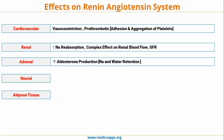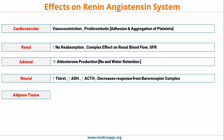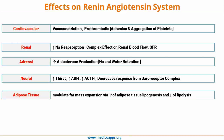In the adrenal glands, the renin-angiotensin system leads to stimulation of the adrenal cortex, resulting in increased aldosterone production, which causes sodium and water retention. At the neural level, there is increased thirst, increased ADH production, increased ACTH production, and decreased input from the baroreceptor complex. For adipose tissue, it modulates fat mass expansion via increased adipose tissue lipogenesis and decreased lipolysis, thereby increasing the fat component of the body.